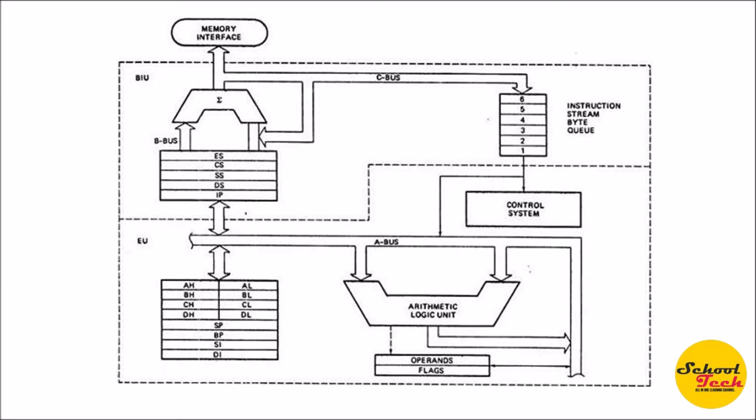Conditional GPR or SPR: 16-bit registers like SI and DI are normally used to store the offset address of the data segment, extra segment, or stack segment. But when these segments are not used in the program, these registers are available as GPRs to store any data — hence they are called conditional GPRs.